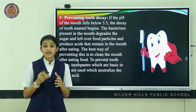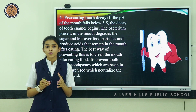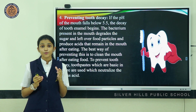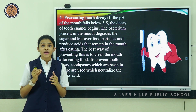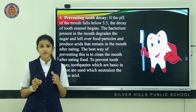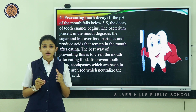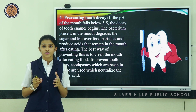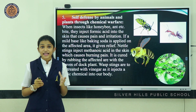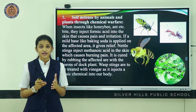Preventing tooth decay is yet another example signifying pH in everyday life. If the pH of the mouth falls below 5.5, the decay of tooth enamel begins. Bacteria in the mouth degrade sugar and leftover food particles, producing acids that remain after eating. The best method to prevent tooth decay is to clean the mouth after eating. Toothpaste, which is basic in nature, is used to neutralize the excess acid.